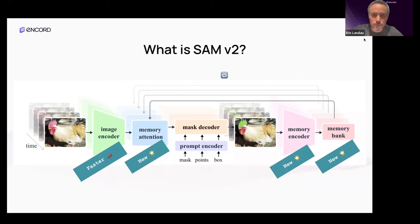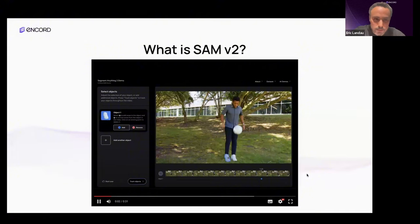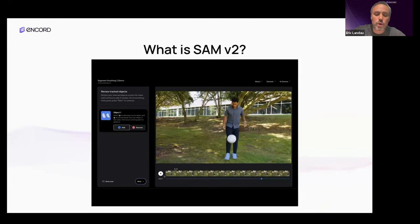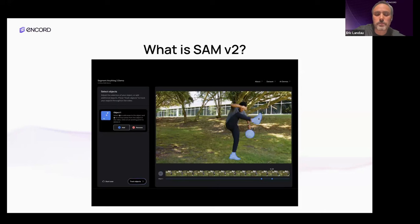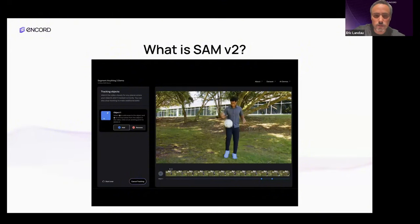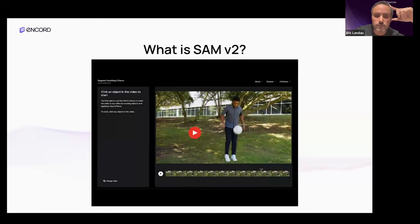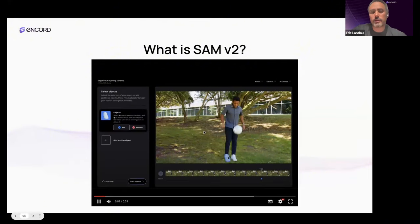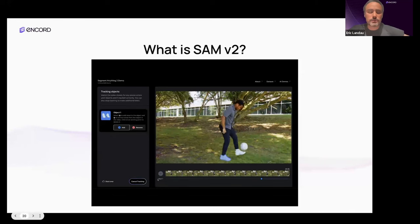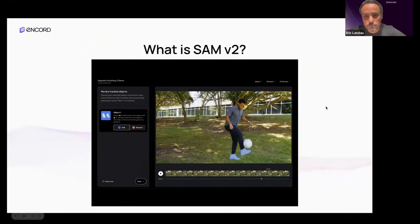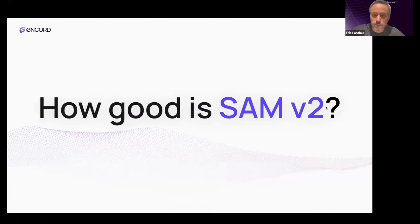Here's Meta's actual demo: they prompt the model on the shoes at the beginning, and it automatically propagates across the video quite effectively. You can dynamically adjust prompts over different frames using positive and negative prompts, continuously iterating to improve segmentation in an interactive way. This contrasts with segmentation tracking models where you propagate once, and if it goes off-track you have to delete and re-propagate. This interactive workflow can be very useful for annotation tasks.